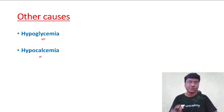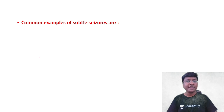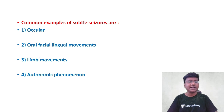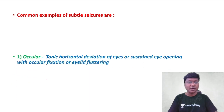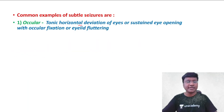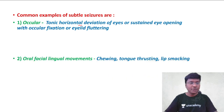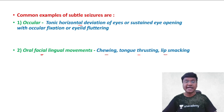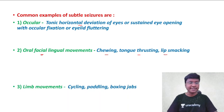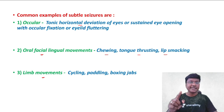The common examples of subtle seizures are: ocular movements (tonic horizontal deviation of the eyes), orofacial-lingual movements (chewing, tongue thrusting, and lip smacking), limb movements, and autonomic phenomena. Ocular movements involve tonic horizontal deviation of the eyes, while orofacial-lingual movements include chewing, tongue thrusting, and lip smacking.